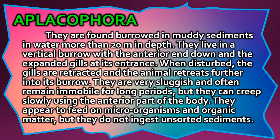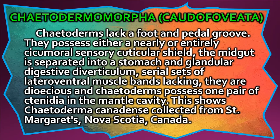Caudofoveata live in a vertical burrow with the anterior end down and expanded gills at the entrance. When disturbed, the gills are retracted and the animal retreats further into its burrow. They are very sluggish and often remain immobile for long periods, but they can creep slowly using the anterior part of the body. They appear to feed on microorganisms and organic matter but do not ingest unsorted sediments.